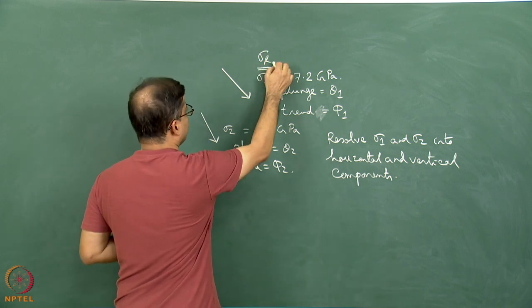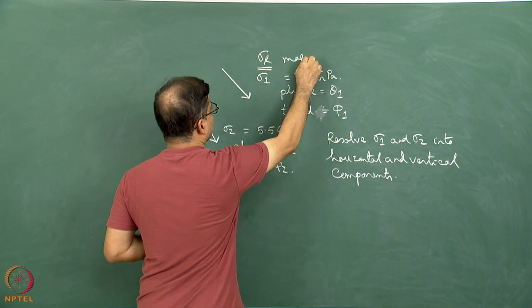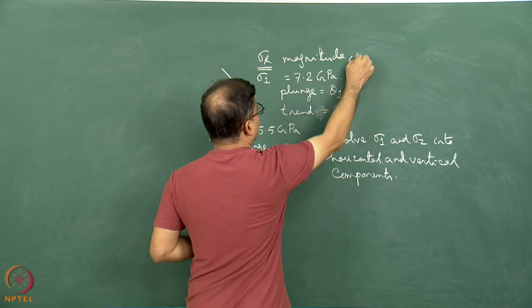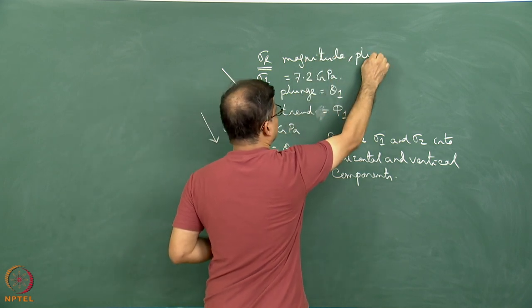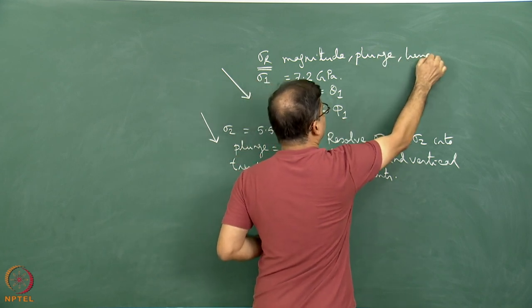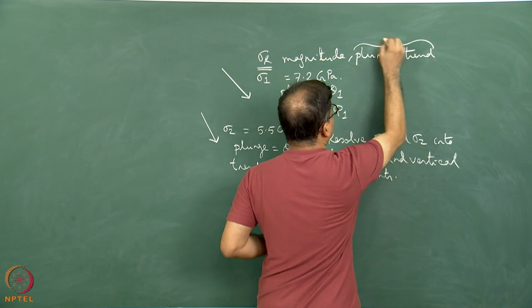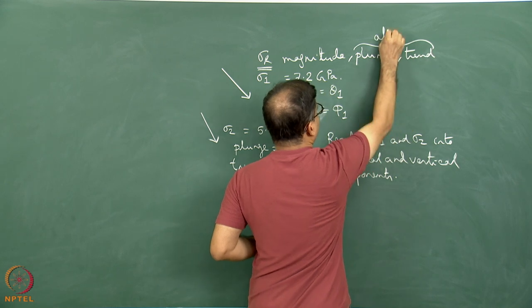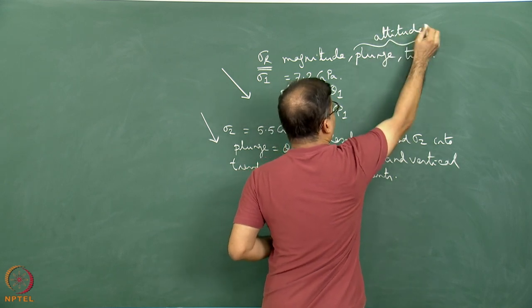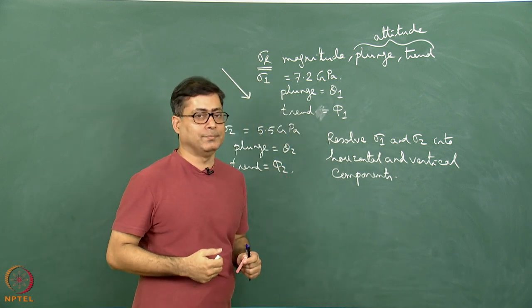What we need is the magnitude, the plunge, and the trend value. These two together — plunge and trend — are known as the attitude of the line of action of sigma r.